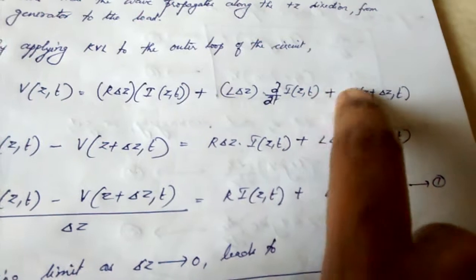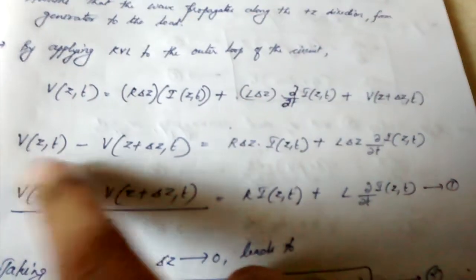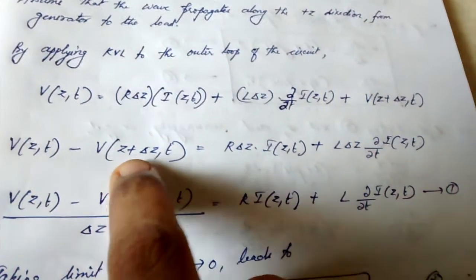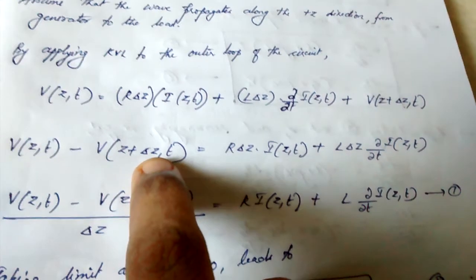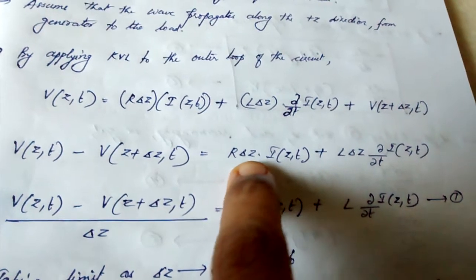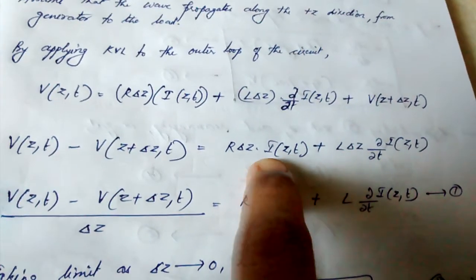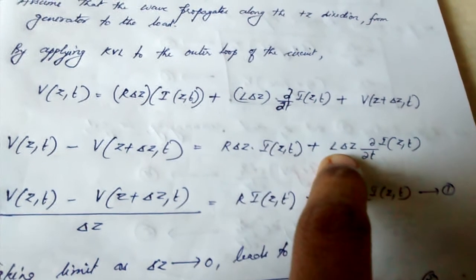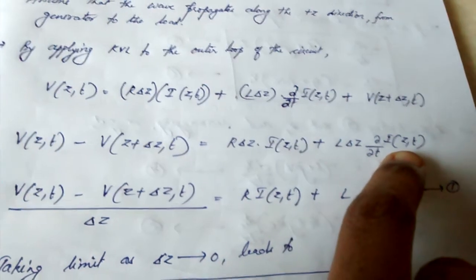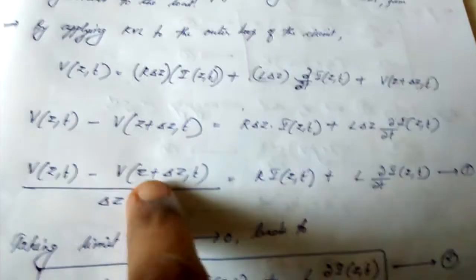We can take V(z + delta z, t) to the other side and divide by delta z. So V(z + delta z, t) is equal to R·delta z times i plus L·delta z times ∂i/∂t, and we divide the left-hand side term by delta z.